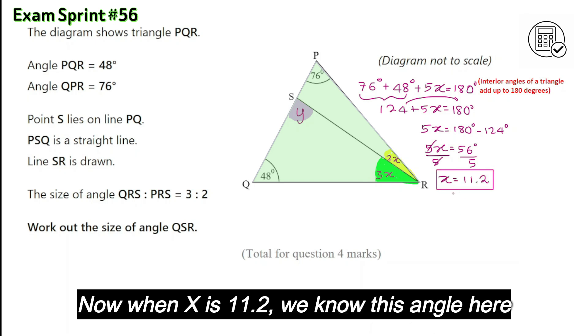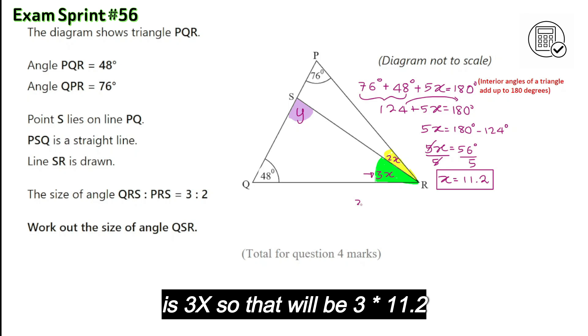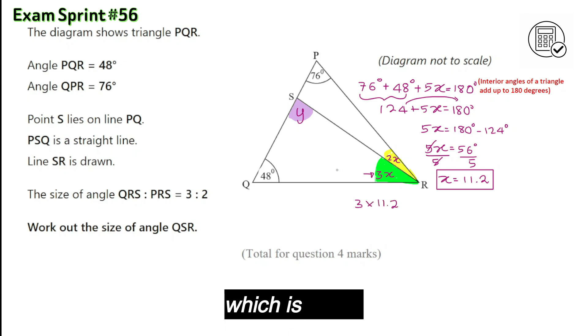When X is 11.2, we know this angle here is 3X. So that will be 3 times 11.2, which is 33.6 degrees.